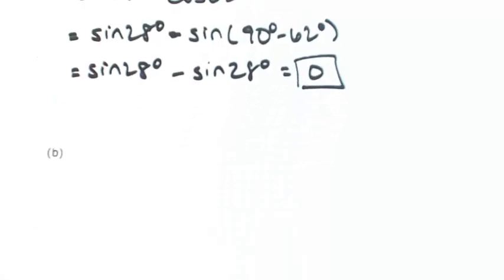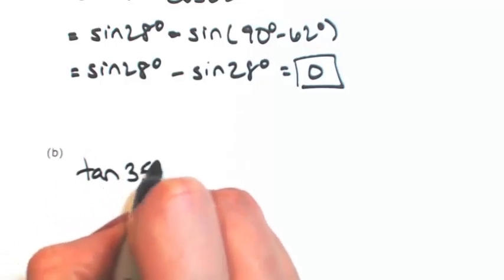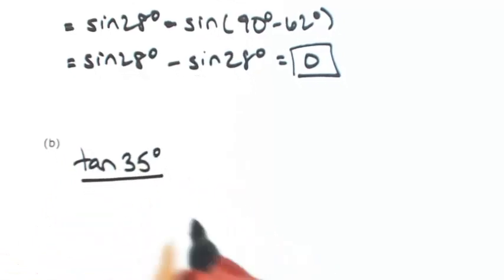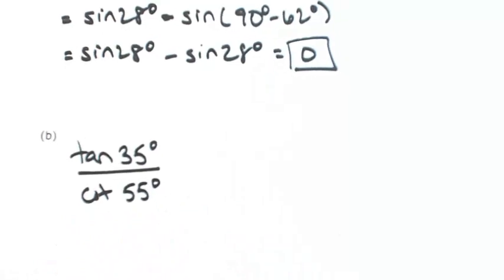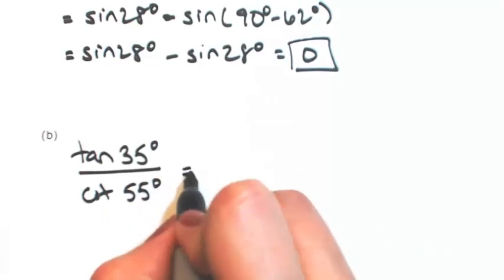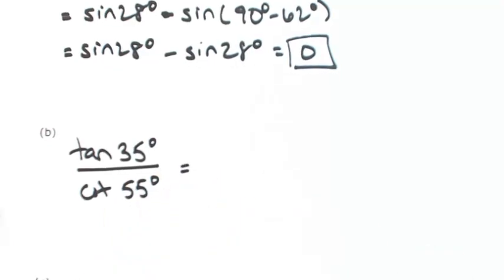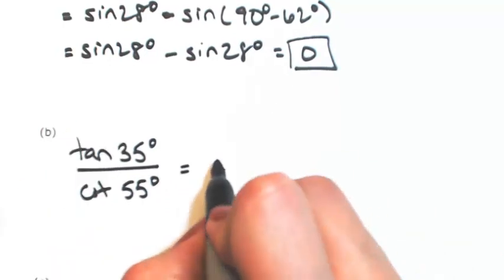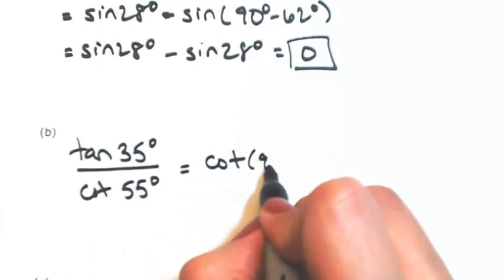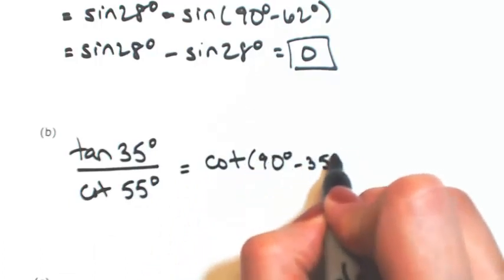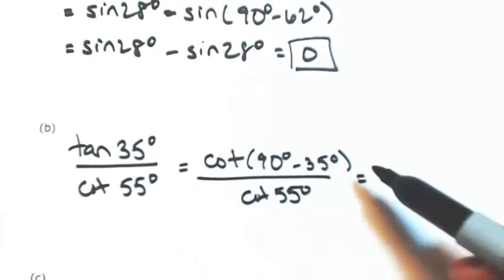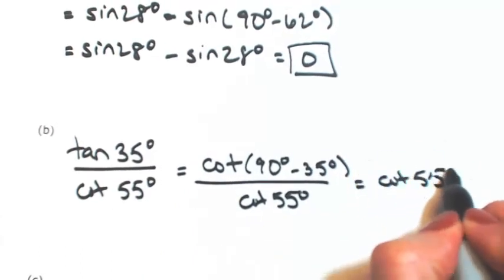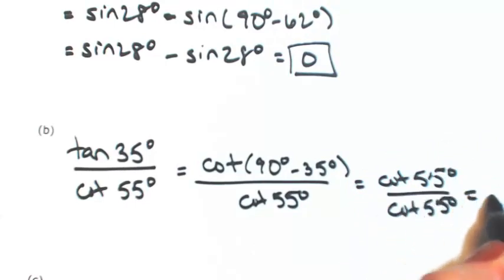Next example: tangent of 35 degrees divided by cotangent of 55 degrees. Since 35 and 55 are complementary, I'll use the complementary angle theorem and change tangent of 35 into cotangent of 90 minus 35, which is cotangent of 55 degrees. So we get cotangent 55 over cotangent 55, which equals one.